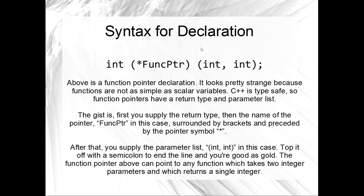Moving right along, we've got to have a look at the syntax for the declaration of a function pointer. It's bizarre - very, very strange. First of all, you say the return type of the function pointer. Then, in brackets, you do star and the name of your function pointer - that's probably the weirdest bit. And after that, you list the parameters in brackets. C++ is type safe, so it needs to know what type of functions this pointer will point to. That's why we've got to give it a return type and a parameter list. The only difference that makes this a function pointer is the brackets around the name and the star.